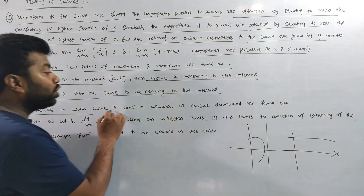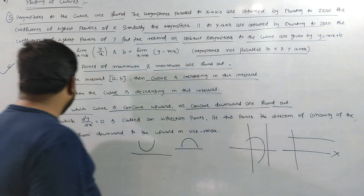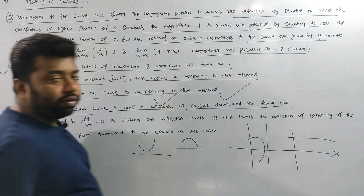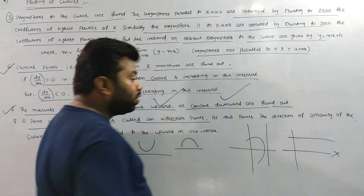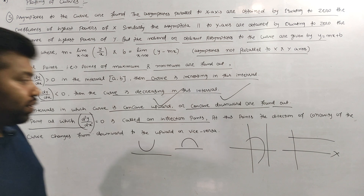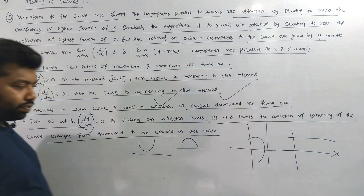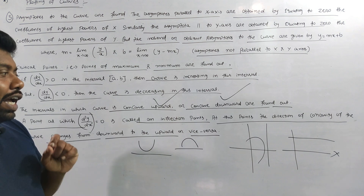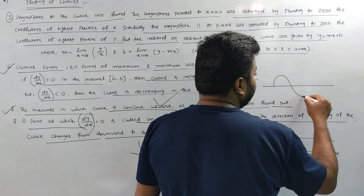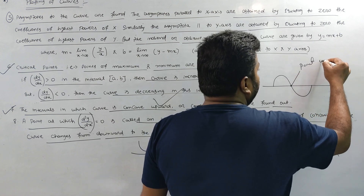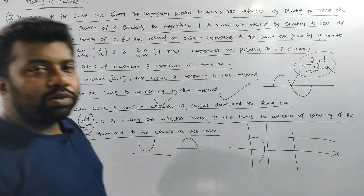The seventh point: find the intervals in which the curve is concave upward and concave downward. At the point at which d²y/dx² = 0, the point of inflection is found — it is neither maximum nor minimum. At this point, the direction of concavity of the curve changes from downward to upward and vice versa.